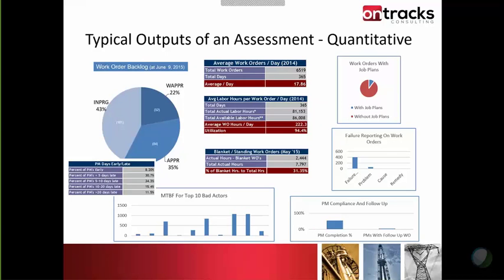Some of the quantitative outputs — and these have been pulled from a client assessment: we look at things like work order backlog, which tells us how quickly work orders get entered versus how quickly they move to being assigned and executed. We look at PMs days early and late — if you consistently finish PMs a month early you might be spending more on maintenance than you need to be. On the other side, if you're consistently late on PMs there could be compliance implications and increased asset degradation. You should adjust the frequency, but you shouldn't be consistently doing PMs late.